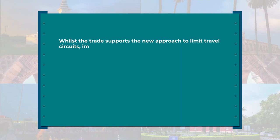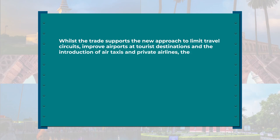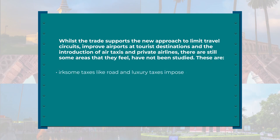If we are to achieve the benefits of tourism, we have to ensure a better and balanced spread of the infrastructure. If funds are not forthcoming, the privatization process can be sped up and foreign investments sought to fill the gap between needs and resources, which is now being done by the Government of India. The trade supports the new approach to limit travel circuits, improve airports at tourist destinations, and the introduction of air taxis and private airlines, though there are still some areas they feel have not been studied sufficiently.